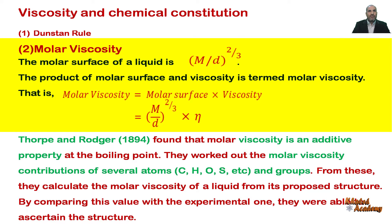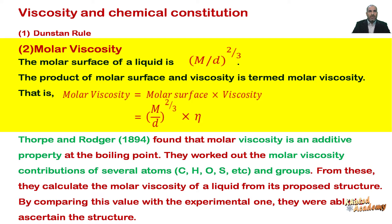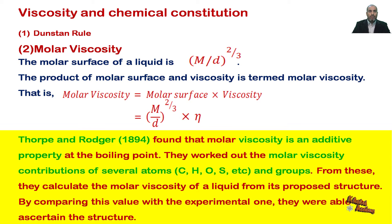The molar surface of a liquid is equal to M divided by D to the power of two-thirds. The product of molar surface and viscosity is termed molar viscosity. That is, molar viscosity equals molar surface times viscosity, which gives: molar viscosity = (M / D)^(2/3) × Eta.